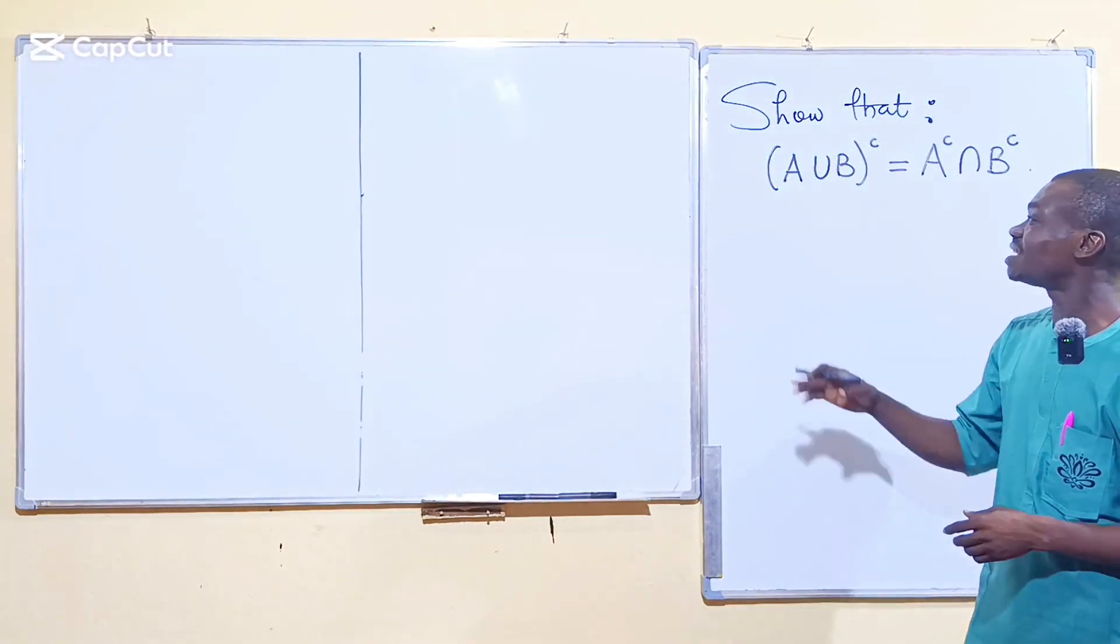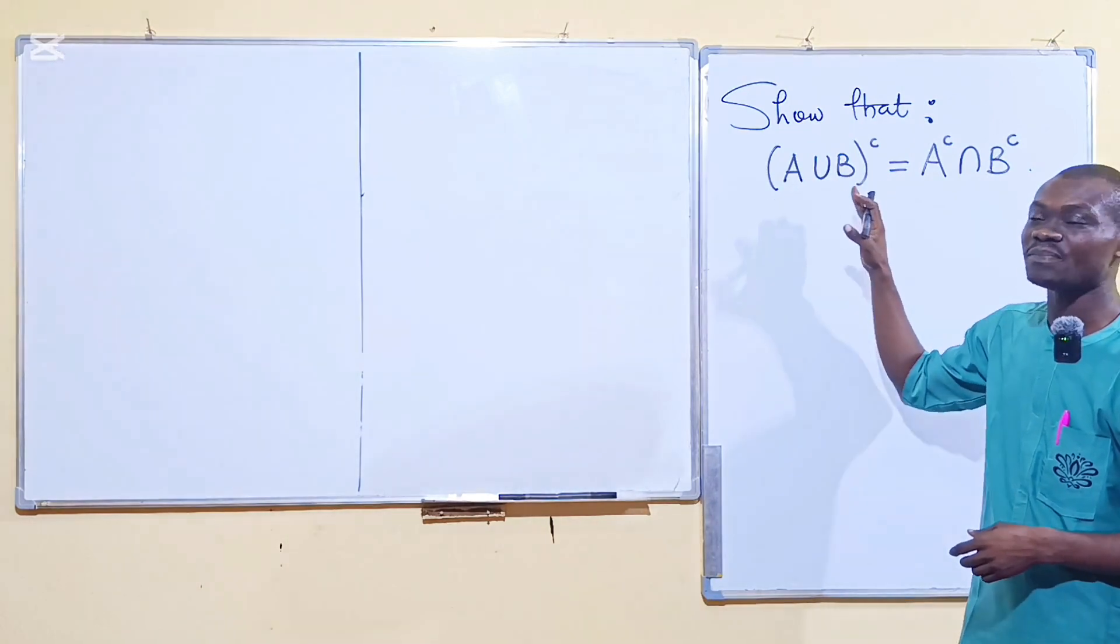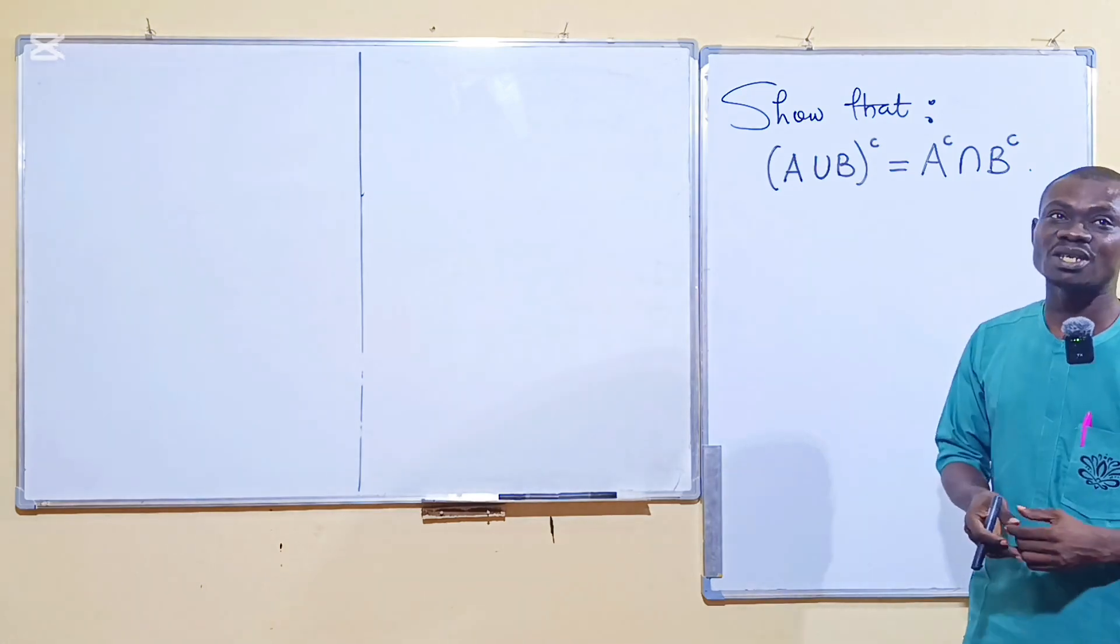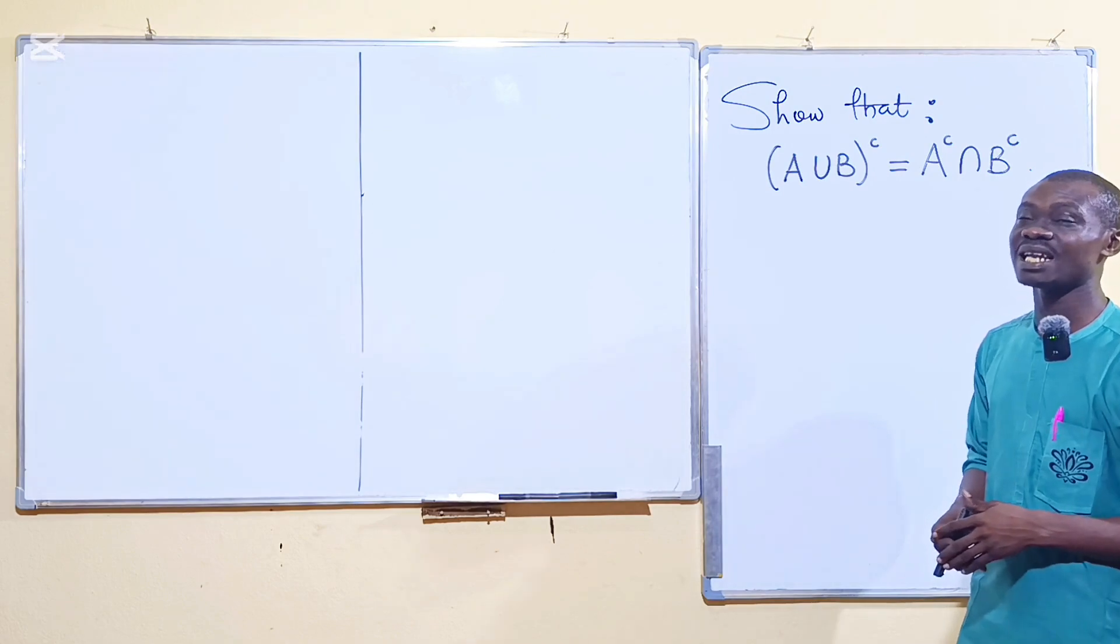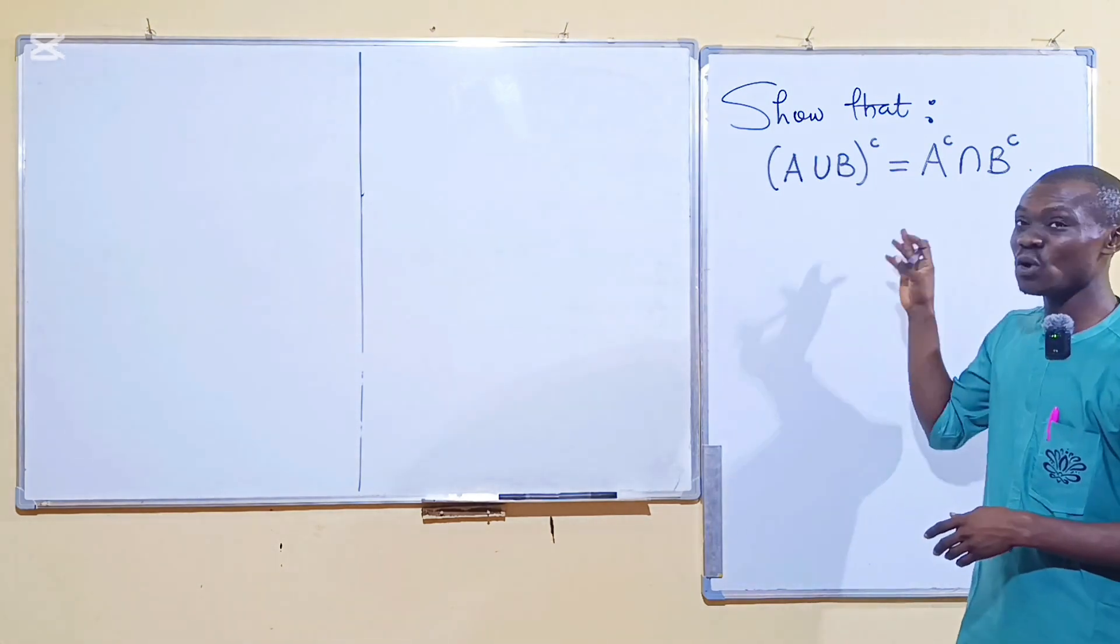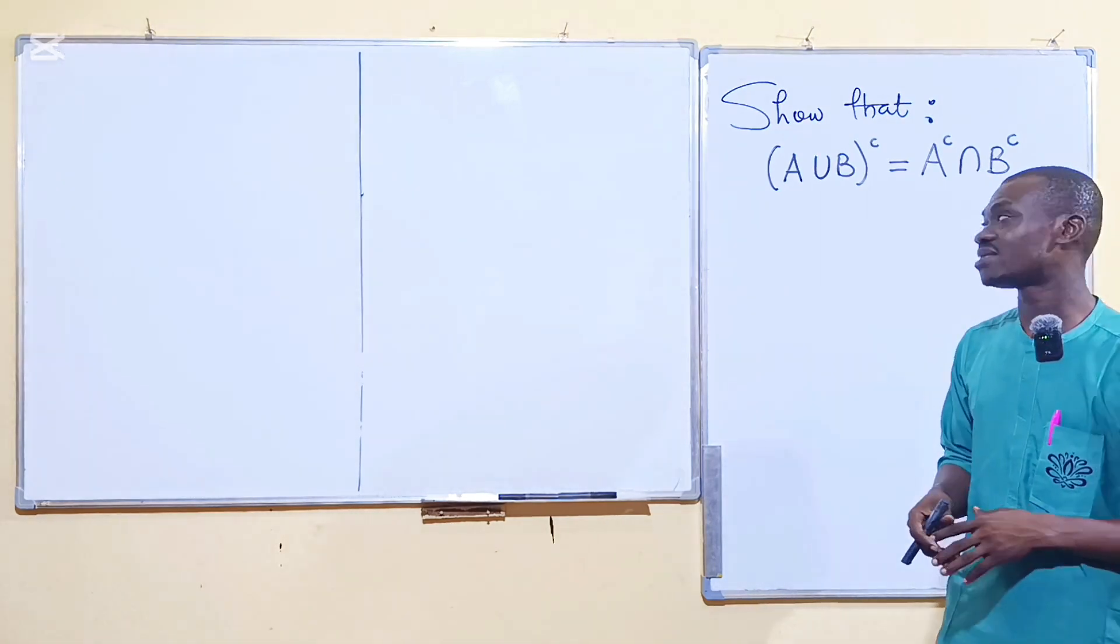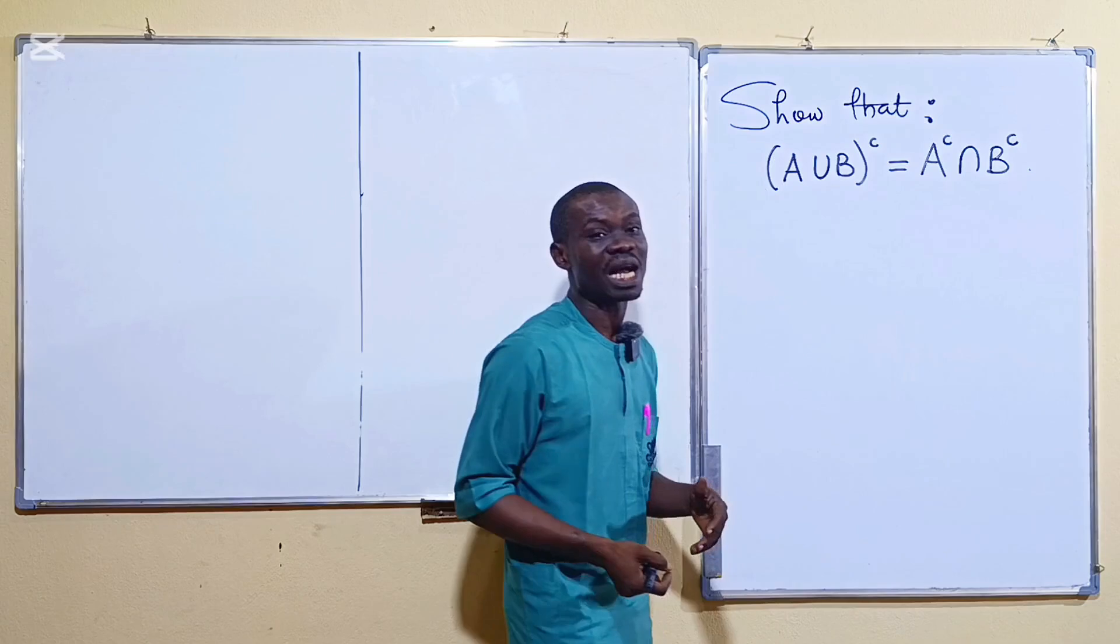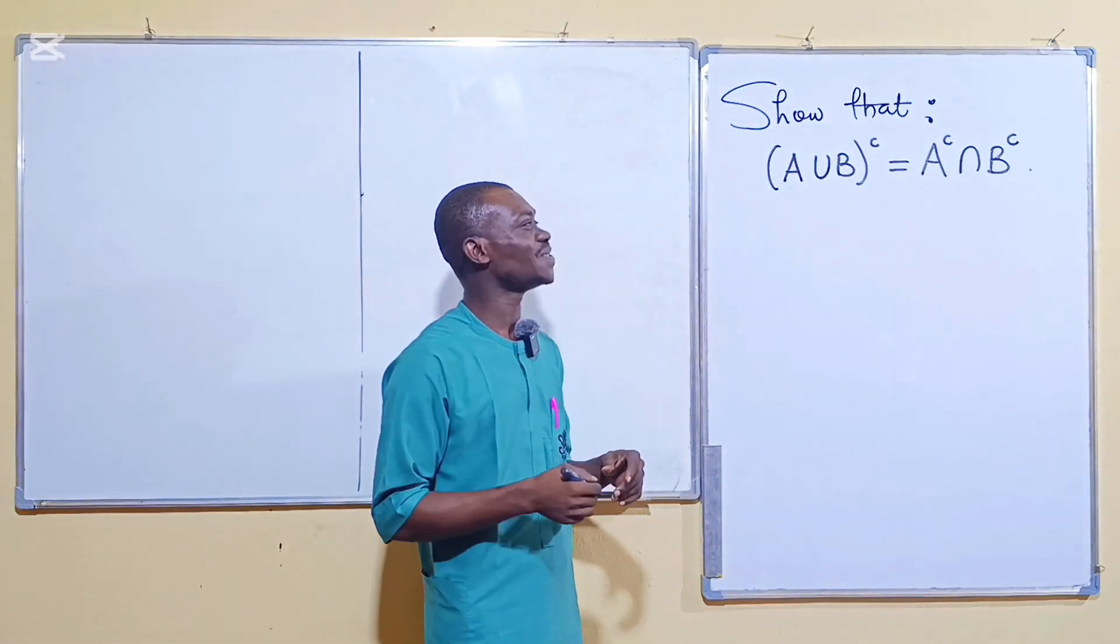Here it says we should show that the complement of the union of A and B is equal to the complement of A intersection the complement of B. I'm sure this is not the first time you're seeing this. That's De Morgan's rule in set theory. And then of course it has a second part which I'm going to be giving to you as an exercise.